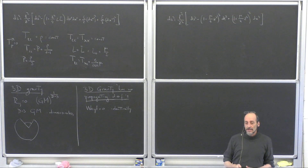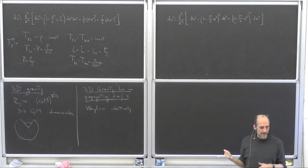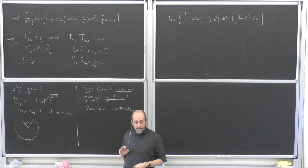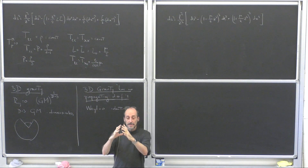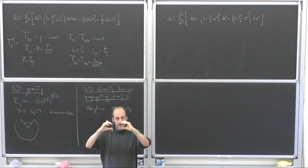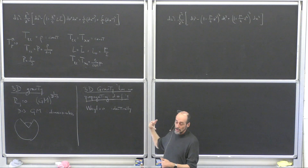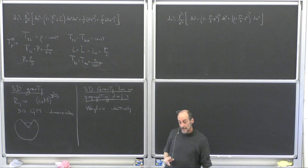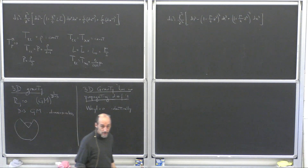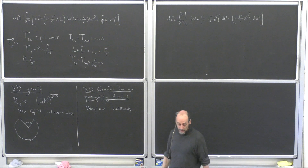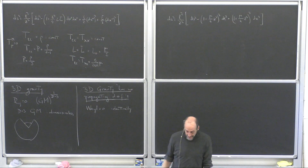Another way to see this: in 2+1 dimensions you cannot have gravitational waves because you don't have room for quadrupolar motion. A gravitational wave propagating in one direction distorts matter on planes transverse to the propagation direction. But if you have only one spatial direction transverse to the propagation axis, things can only move up and down — that allows for dipolar motion but not quadrupolar motion. Gravitational waves induce quadrupolar motion, so there can't be any gravitational waves in 2+1 dimensions.